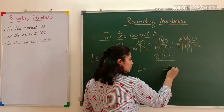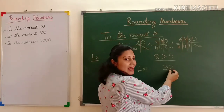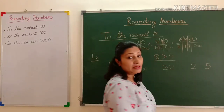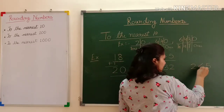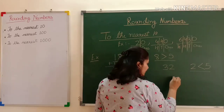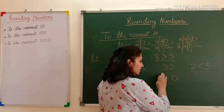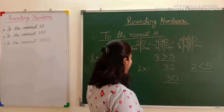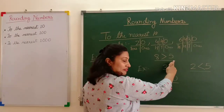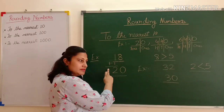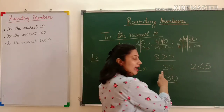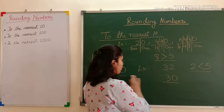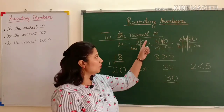Let's see another example: the number 32. In its ones place it has the digit 2. I will compare 2 with 5 — 2 is smaller than 5. In this case, I will write zero in the ones place and will not add anything to the tens place; I keep the same tens digit. So when the ones digit is smaller than 5, you just replace ones with zero and keep the tens digit the same. That is how you round a two-digit number to the nearest ten.